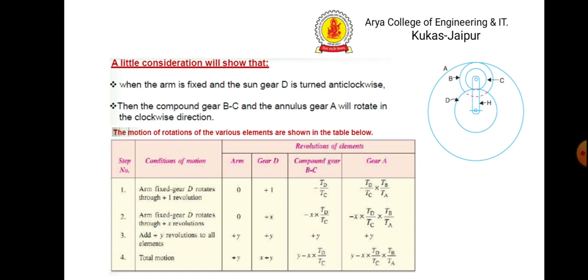Gear a also meshes with the compound gear internally, so the direction of compound gear bc and gear a will be the same. For gear a it will be minus td by tc multiplied by tb by ta. For the second row, multiply by x. For the third row, add plus y. The fourth row is the total sum of rows two and three.